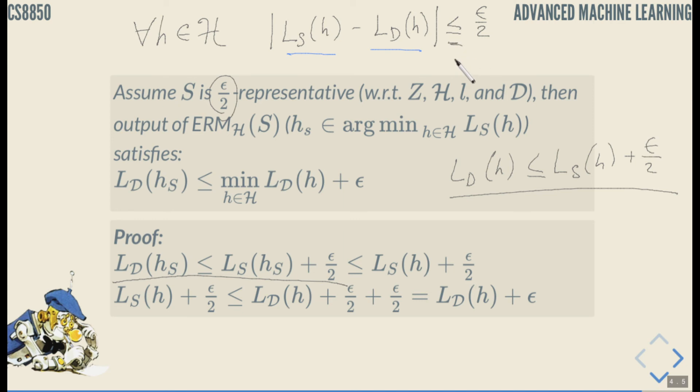Then because H sub S is the minimizer already, it's a hypothesis from the hypothesis set H that minimizes empirical loss, any other hypothesis either gives us either the same empirical loss or larger empirical loss. So this inequality holds as well.